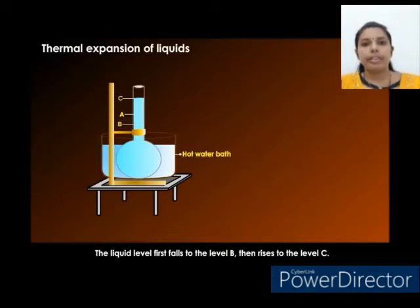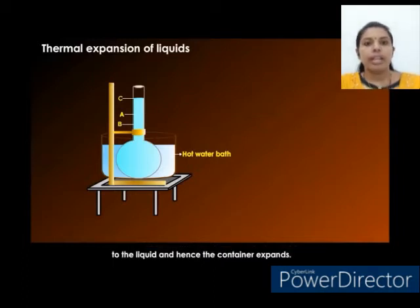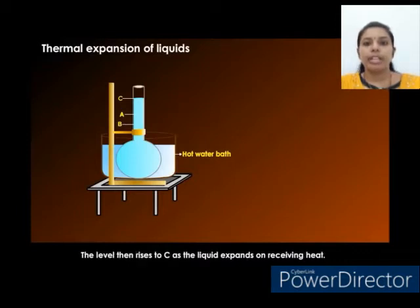The liquid level initially falls to B because the heat of the water bath is immediately transferred to the glass container and hence the container expands. The level then rises to C as the liquid expands on receiving heat.